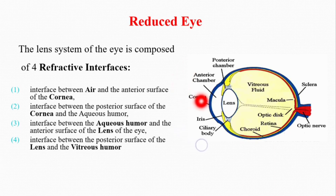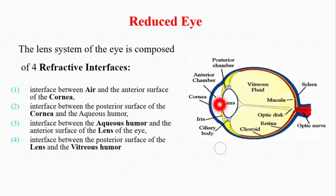The second refractive surface is between the posterior surface of the cornea and the fluid in the anterior chamber — that is, the aqueous humor. The third refractive surface is between the aqueous humor and the lens, and the fourth refractive surface is between the lens and the vitreous humor. So in total there are four refractive surfaces or refractive interfaces causing refraction of the light rays.